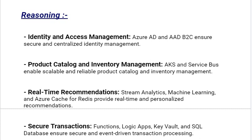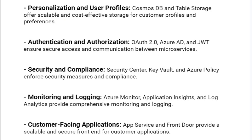Our next reasoning is Secure Transactions: Azure Functions and Logic Apps enable serverless and event-driven processing. Next reasoning: Personalization and User Profile — Cosmos DB and Table Storage offer scalable and cost-effective storage for customer profiles and preferences. Next reasoning: Authentication and Authorization — OAuth 2.0, Azure AD, and JWT ensure secure access and communication between microservices.